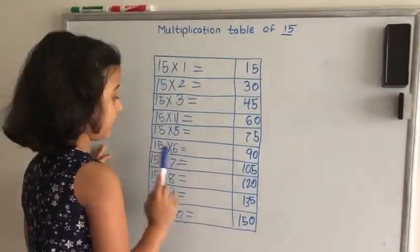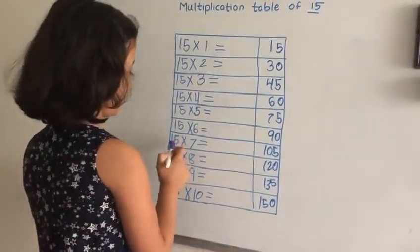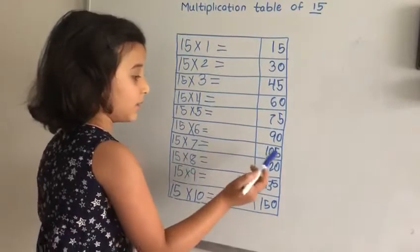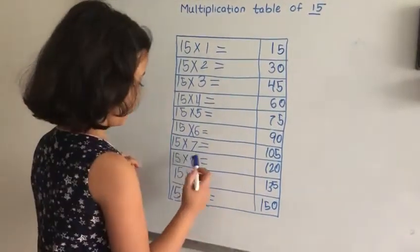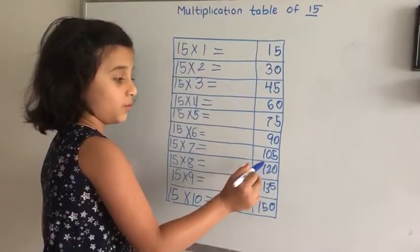15 times 6 equals 90, 15 times 7 equals 105. 15 times 8 equals 120.